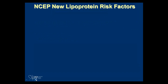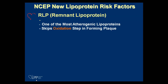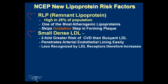The new lipoprotein risk factors under ATP-3 — the basis for a lot of advanced testing today — going from large to small: Remnant lipoproteins, also called remnant-like particles (RLP), are very atherogenic. Importantly, they don't have to be oxidized to be taken up by macrophage cells and form plaque in atherosclerosis. About 25% of our population has high RLP. A recent paper showed that RLP is actually a pro-inflammatory particle, while LDL itself is not necessarily pro-inflammatory.